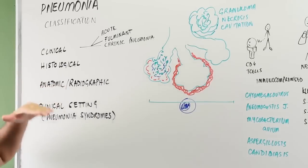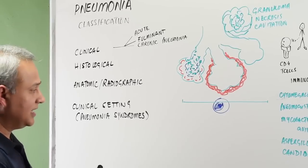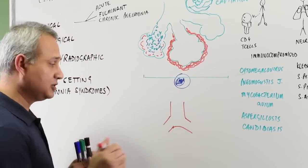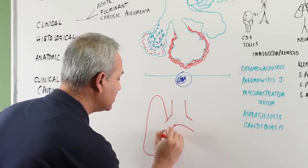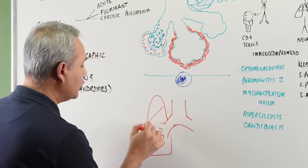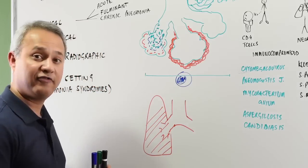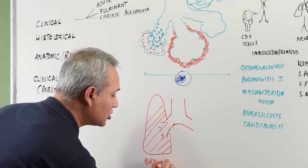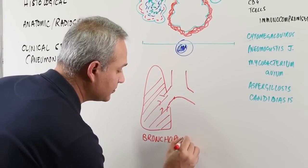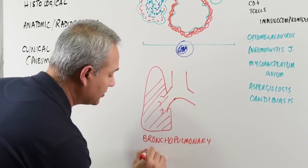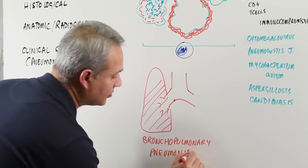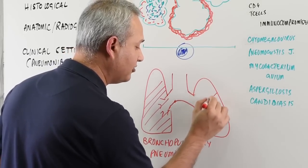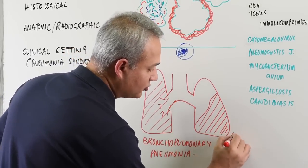Then is anatomic and radiographic classification. There are two basic types. One type is where more than one lobe of the lung is consolidated or affected by pneumonia, so that is called bronchopulmonary pneumonia. On the other hand, if only one lobe is involved, then it is called lobar pneumonia.